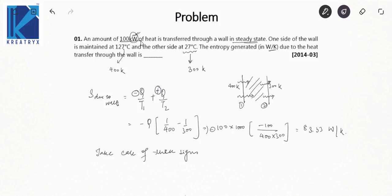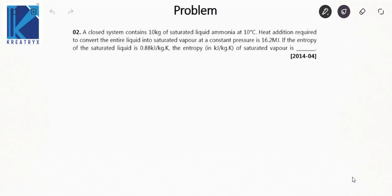Let's move on to the next question. A closed system contains 10 kilograms of saturated liquid ammonia. Temperature is given as 10 degrees Celsius. Heat addition required to convert the entire liquid to saturated vapor — always mark these keywords. The heat addition is at constant pressure and equals 16.2 megajoules. The entropy of the saturated liquid is given; you have to find the entropy of the saturated vapor.